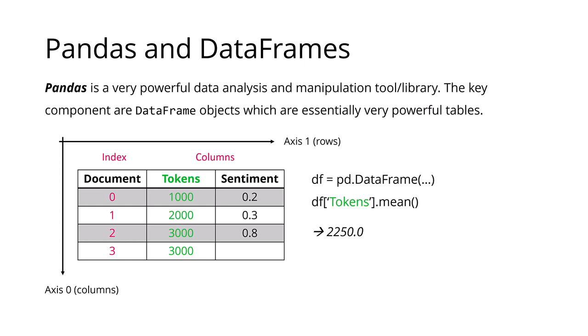Let's look at two more things before we go into the exercises. First, let's look at pandas. Pandas is a powerful data analysis and manipulation library used in more or less any data science project in Python — think of it as an Excel spreadsheet type thing within Python, but a lot more powerful. The key component are so-called DataFrame objects. DataFrames are tables where you can do very powerful things. Here you can see a data frame with documents 0,1,2,3 with an index referring to individual rows, and two columns: tokens and sentiments.